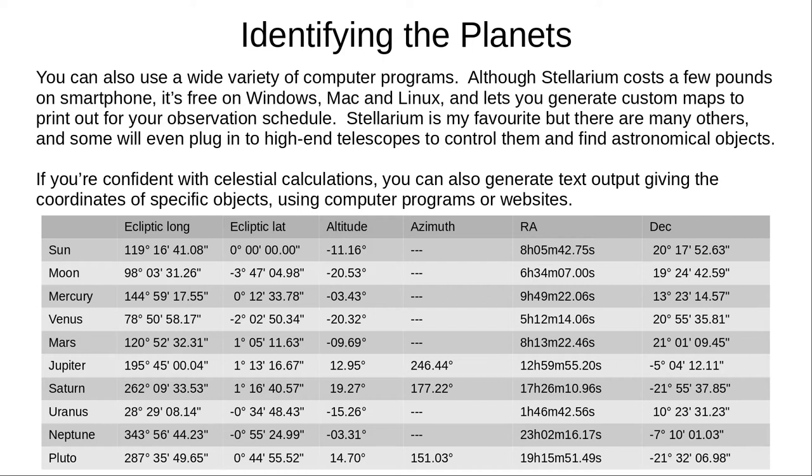And, if you found the maths in the Celestial Calculations video quite easy, you can use some programs and websites to generate text coordinates of specific objects at a certain location, date, and time. You can see on-screen the data I used to chart the locations of the planets that we saw earlier.